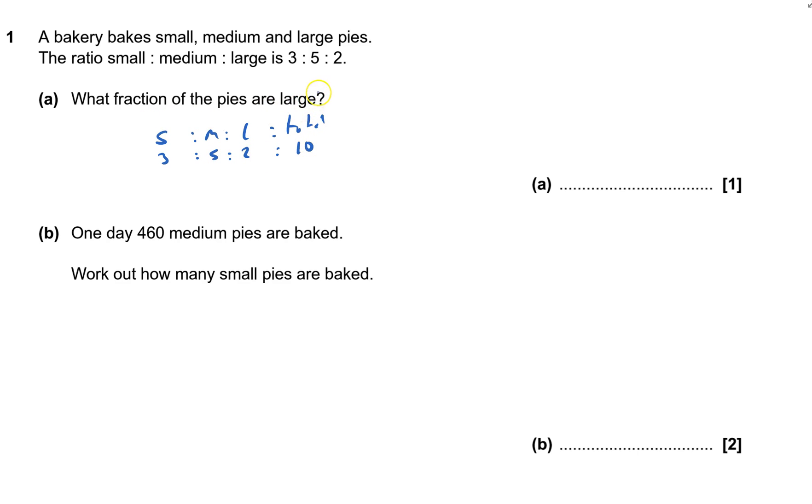Okay, what fraction of the pies are large? Well, two of them are large out of 10, so that would be two tenths. You could cancel that down to a fifth if you want to.